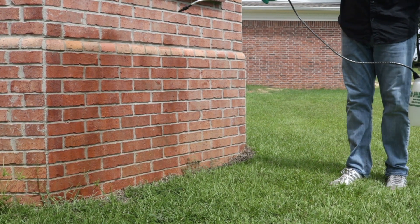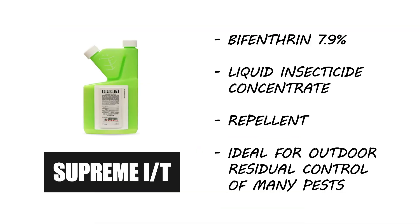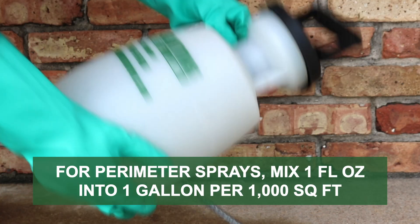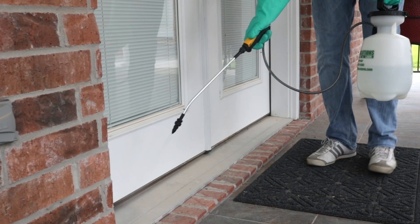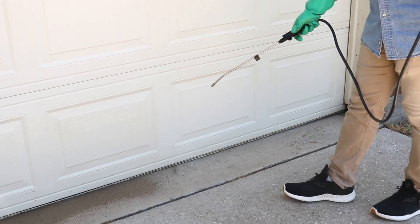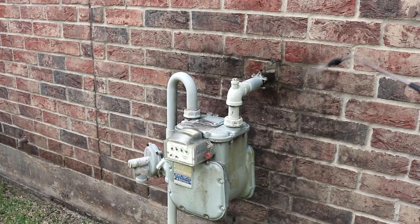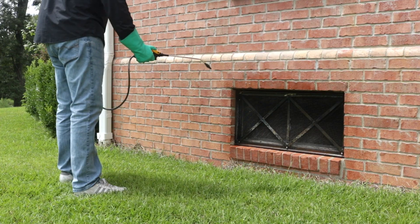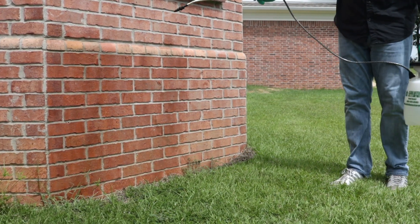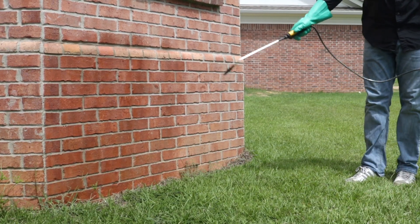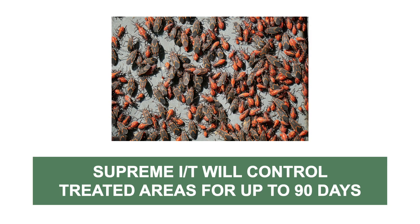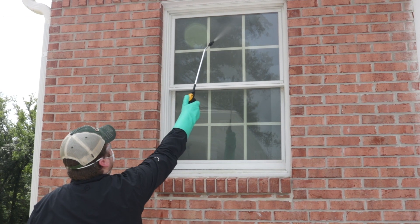To create barriers outdoors and stop pests from entering in the first place, apply a product like Supreme IT as a perimeter application. Supreme IT is a bifenthrin-based insecticide with repelling properties. As a barrier spray, mix 1 fluid ounce of product into 1 gallon of solution to treat up to 1,000 square feet. Spray around entry points like doors and windows, the garage door, voids in the wall, utility penetrations, and other cracks and crevices overwintering insects can use. Then spray around the perimeter of your home by spraying 3 feet up the structure and 3 feet out. When applied properly, Supreme IT will control treated areas for up to 90 days. Insects that make contact with the spray or its residual will have their nervous systems impacted and will die shortly. Make reapplications every 3 months for continued control.